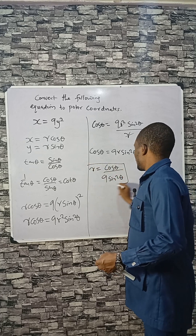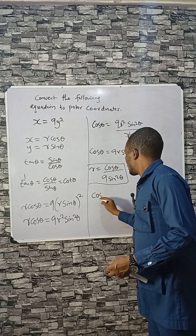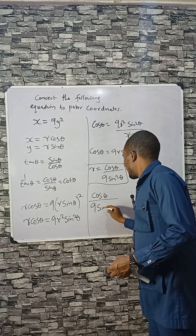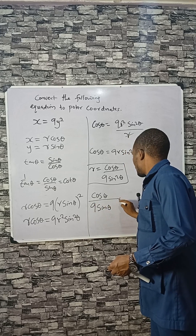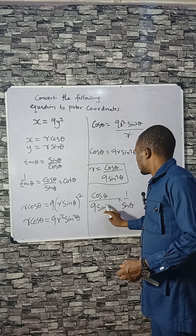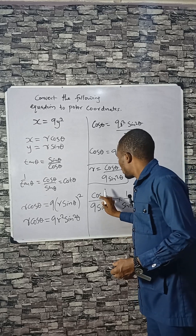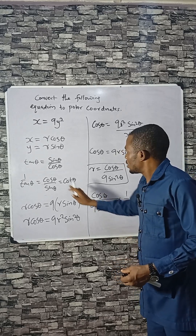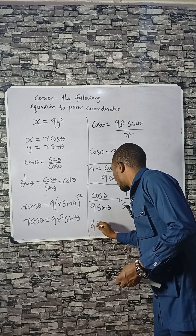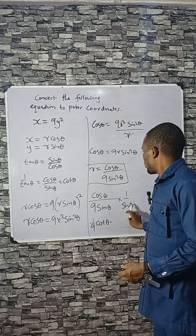You can stop here, or simplify further. We can write cosθ divided by 9 sin²θ as cosθ divided by 9 sinθ times 1 over sinθ, since sinθ × sinθ gives sin²θ. Remember that cosθ over sinθ is cotθ.